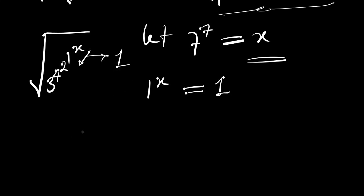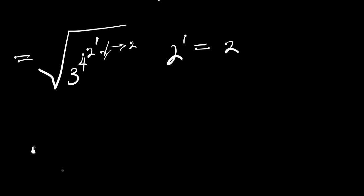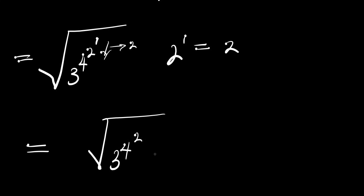Now we are going to have 3 power 4 power 2 power 1, and 1^x is 1. The next thing is to consider 2 again. We have 2^1, and this equals 2, so we replace 2^1 with 2. That means we are going to have 3 power 4 power 2, where 2^1 has been replaced by 2.